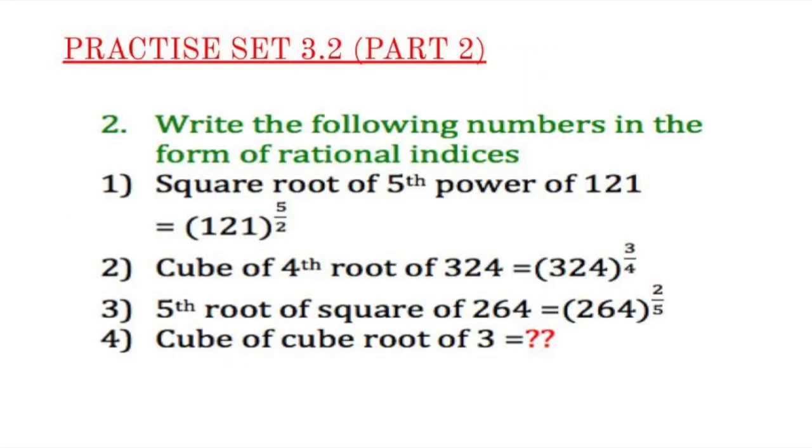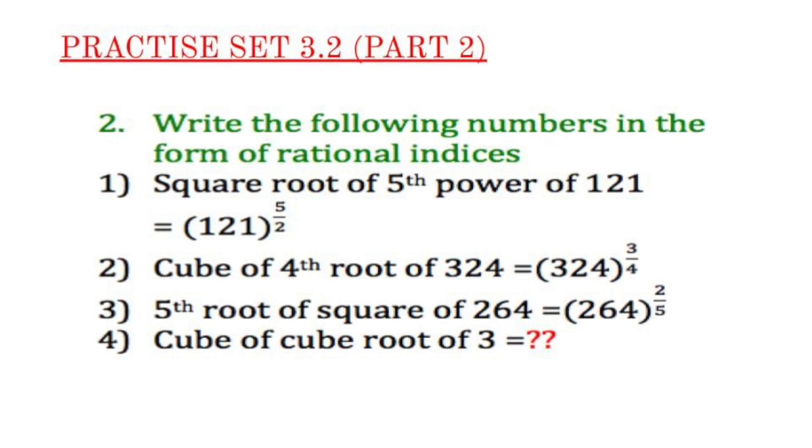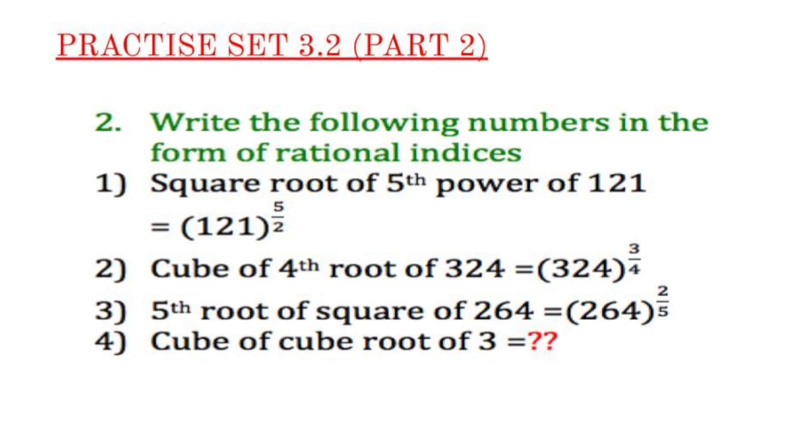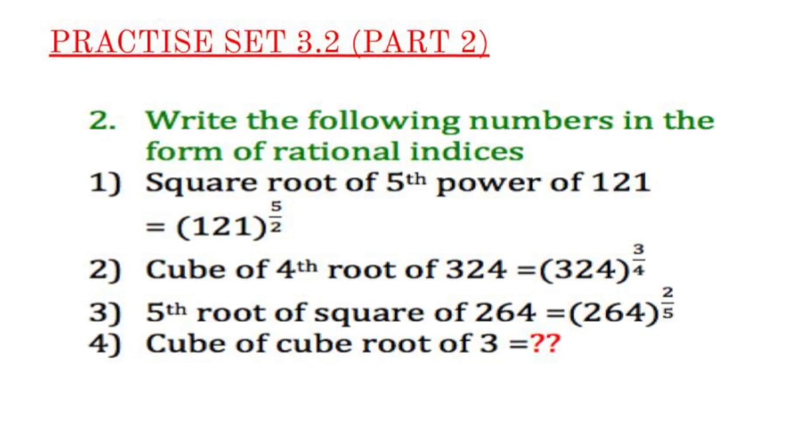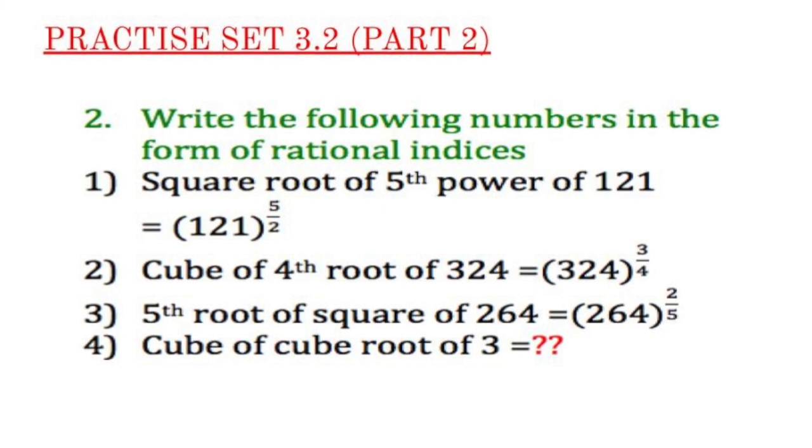Now part 2 of exercise 3.2 is again the reverse order of part 1. Now you have to write the following numbers in the form of rational indices. Now the first one square root of 5th power of 121. I told you the root goes down as the denominator and power goes on top as the numerator. So here we have 121 raised to 5 upon 2.